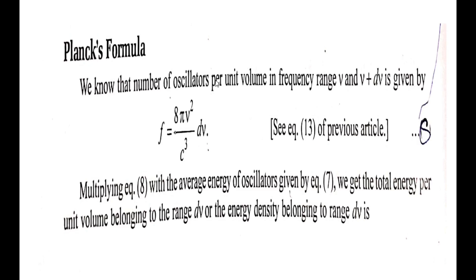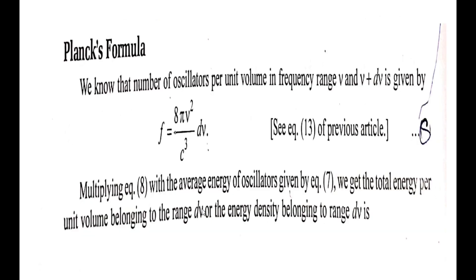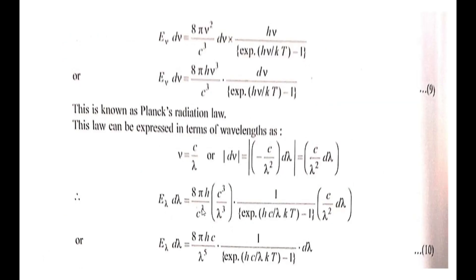Now, using the number of oscillators in the frequency range ν to ν + dν given by f = (8πν²/c³) dν, and multiplying by the average energy, the energy density in the range dν is: E_ν dν = (8πhν³/c³) · 1/(e^(hν/kT) − 1) · dν. This is known as Planck's Radiation Law.